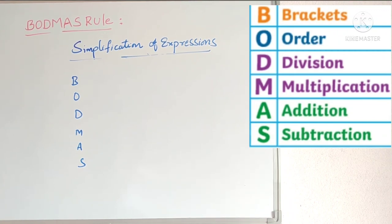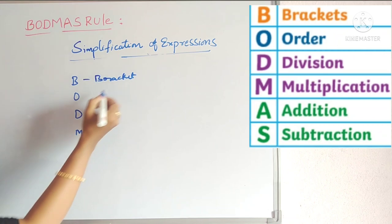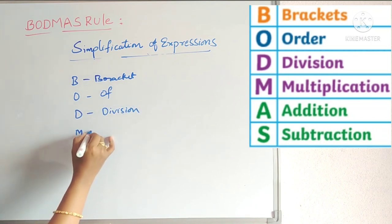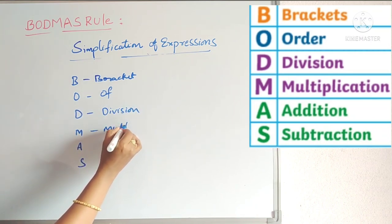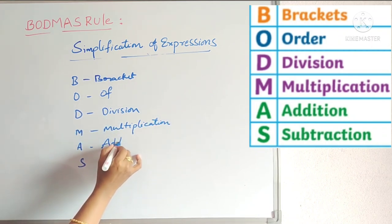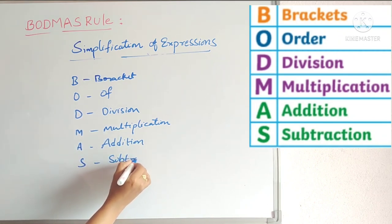Hello students, welcome to my channel. Today we will see the BODMAS rule and Exercise 1.4 which is related to this BODMAS rule. So BODMAS: B for Bracket, O for Of, D for Division, M for Multiplication, A for Addition, and S for Subtraction.